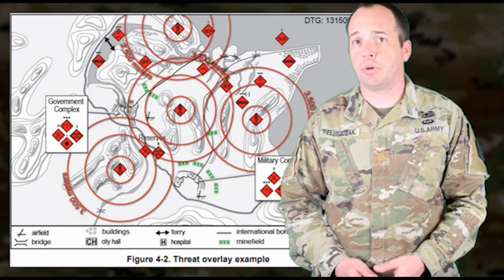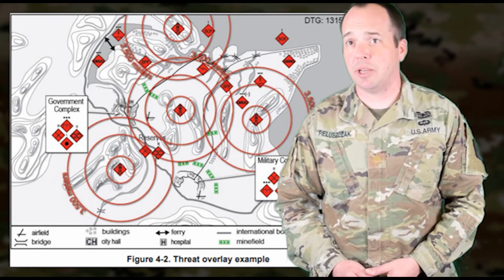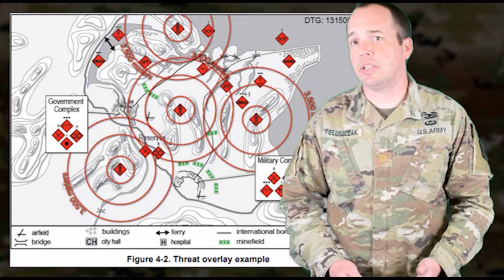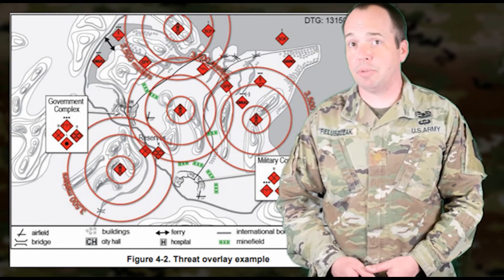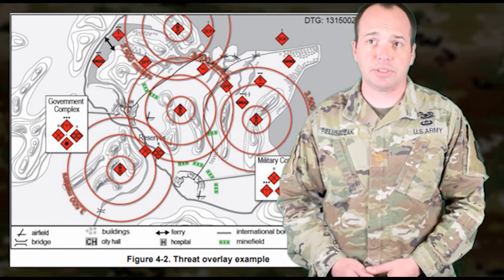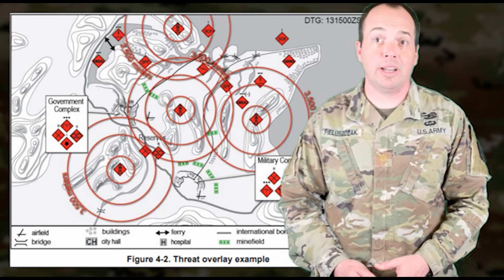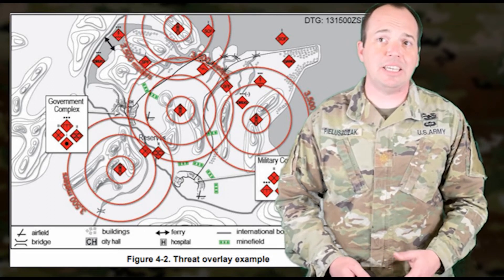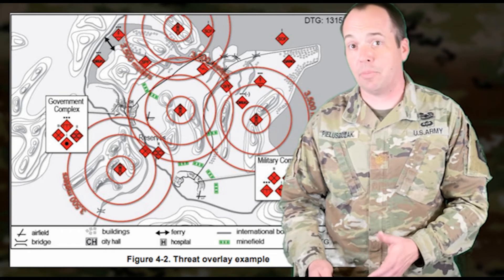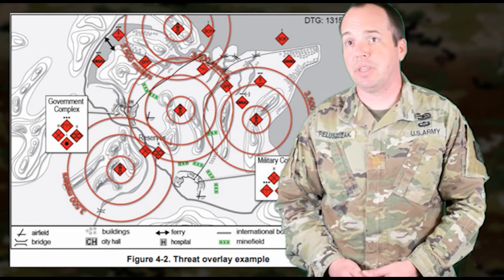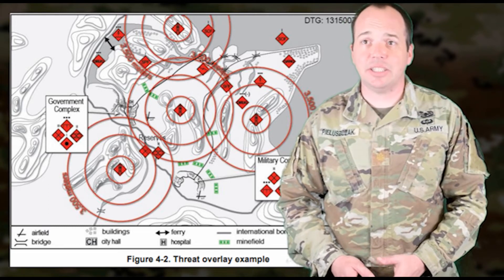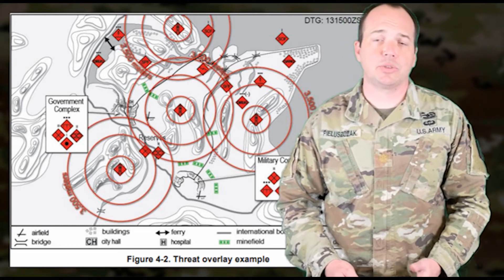A second supporting product known as the threat description table accompanies this overlay and resembles an Excel-like document that identifies the type of unit, its location using military grid reference system, and if at all possible, or at a minimum, the location of a key terrain feature or town of that key weapon system. Provide a general description of activities with TTPs and additional information like strength and composition.